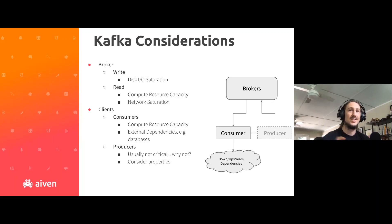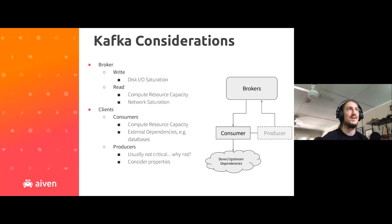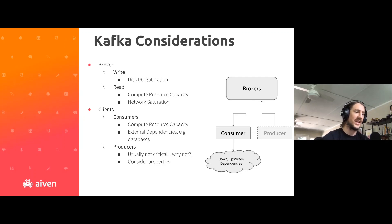For clients: for consumers, same sort of thing — compute resource capacity. Make sure your application can handle messages being published to the topic much more quickly than your normal load. Make sure those applications scale as needed, vertically or horizontally. And external dependencies — if you're used to 100 messages per second and start getting 1,000 messages per second, make sure your databases can handle that. Make sure any other micro services, especially REST APIs, can handle that traffic and can also scale.